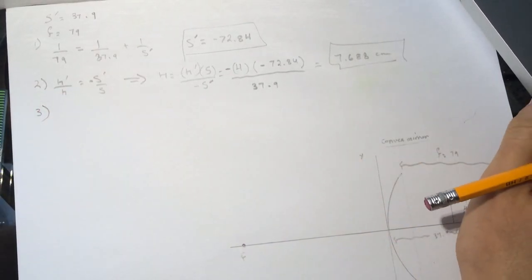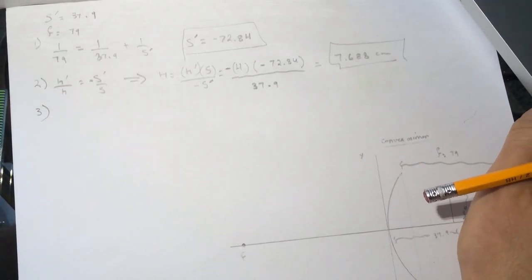So what is H prime here? H prime is the 4 centimeters. Let's put this negative here and then the S, the S was a negative value which was the one we got here, 72.84, divided by the S prime, and the S prime was the 37.9.